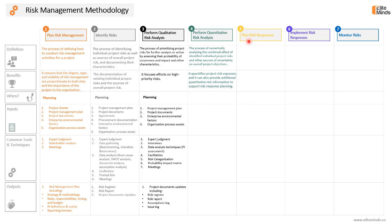The outcome of the quantitative analysis process will support the following step — plan risk responses. This process is also part of the planning phase. We will need the project management plan as an input, mainly the risk management plan showing how we will conduct quantitative risk analysis activities, in addition to the performance baselines. We will also need project documents like the assumption log, cost estimates, duration estimates, and definitely the risk register and risk report as key inputs, along with enterprise environmental factors and organizational process assets.